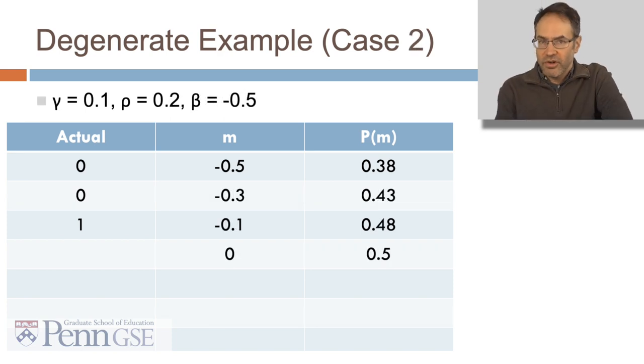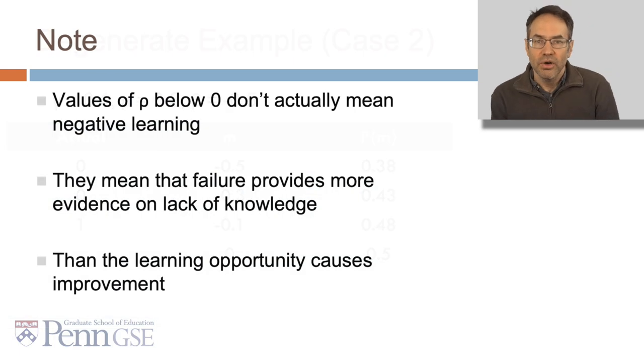Here's an example of degeneracy case two. In this case, rho is greater than gamma, which means you get better if you get it wrong than if you get it right. Another thing to note, values of rho below zero don't actually mean negative learning. What they mean is that failure provides more evidence on a student's lack of knowledge than the learning opportunity causes improvement. And that's why it's not degenerate to have rho above zero.